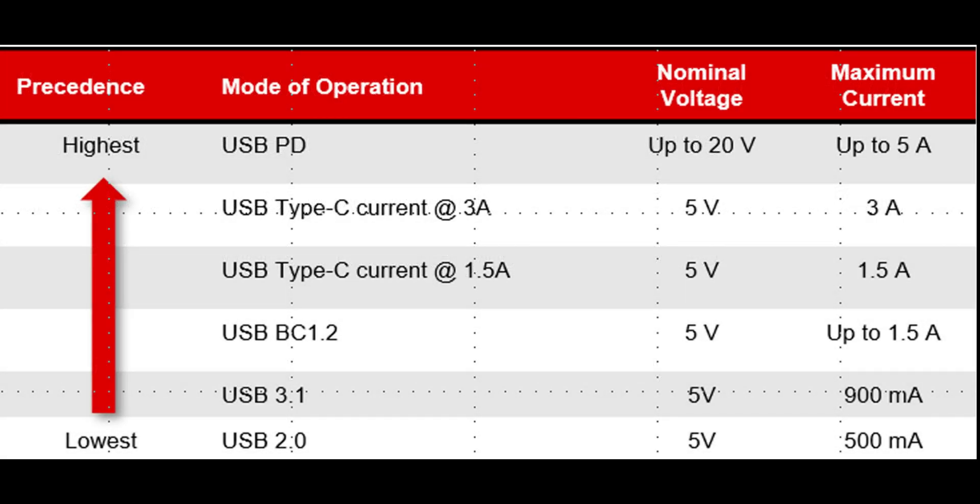Here is the chart for nominal voltage and maximum current. USB 2 has 5V, 500mA. USB 3.1: 5V, 900mA. USB-C 1.2: 5V up to 1.5A. USB Type C current 1.5A: 5V, 1.5A. USB Type C current 3A: 5V, 3A. And nowadays USB Type C supports 5A.